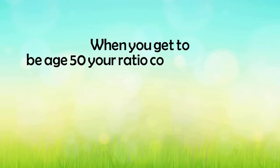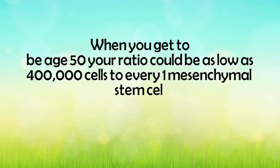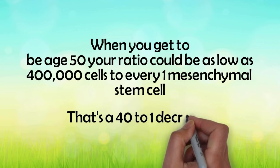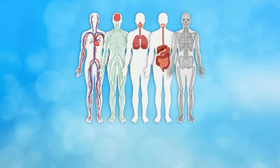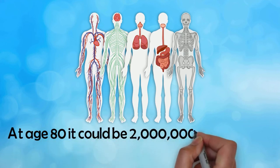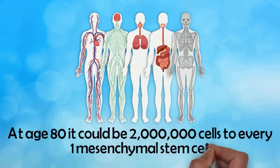When you get to be age 50, your ratio could be as low as 400,000 cells to every one mesenchymal stem cell. That is a 40 to 1 decrease, meaning your body has 40 times less healing potential as it did when you were born. At age 80, it could be 2 million cells to every one mesenchymal stem cell — that means 200 times less healing potential than when you were born.